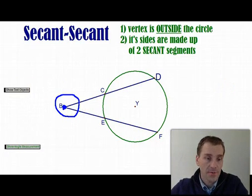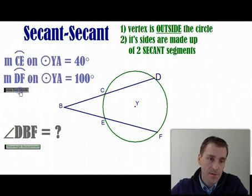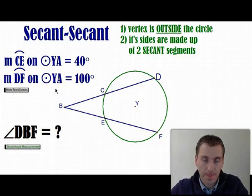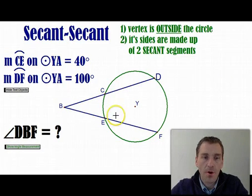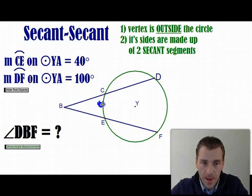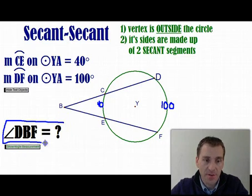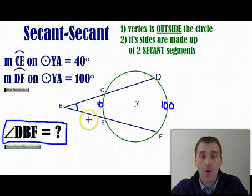Let's work through an example — write this in your foldable. Arc CE is 40 degrees, and arc DF is 100 degrees. The question is: what is the measure of secant-secant angle DBF?